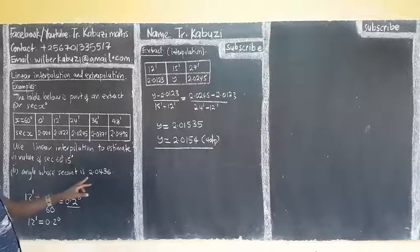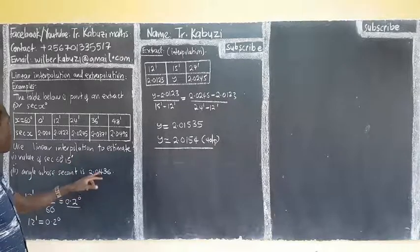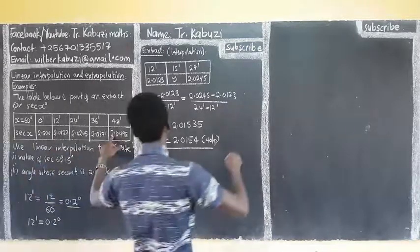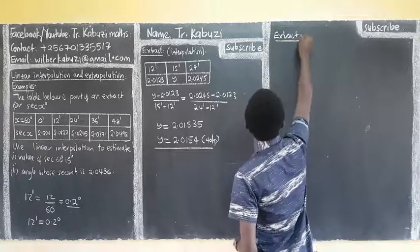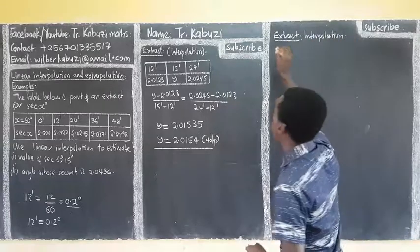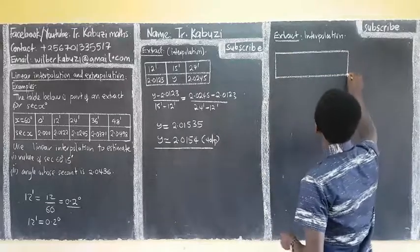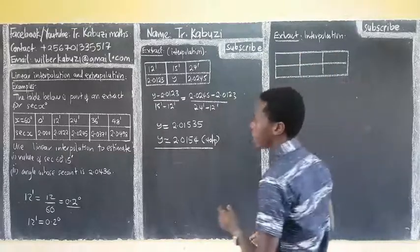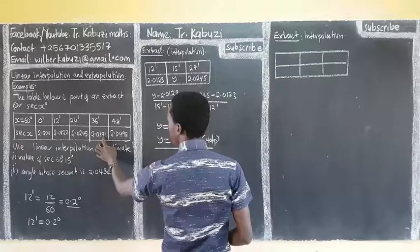If you need to find the angle when given the value, here's the second example. This value 2.0404 is between these two values in the table. So here we are also going to use interpolation to find the unknown angle.